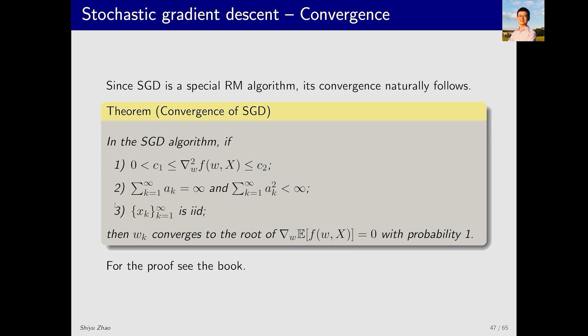Since SGD is a special RM algorithm, we can apply the convergence conclusions of RM algorithms to analyze the convergence of SGD, leading us to this conclusion. Let's briefly go through this conclusion. If SGD satisfies the following three conditions, then w_k will eventually converge to w*, which is the solution to the equation, with probability 1.